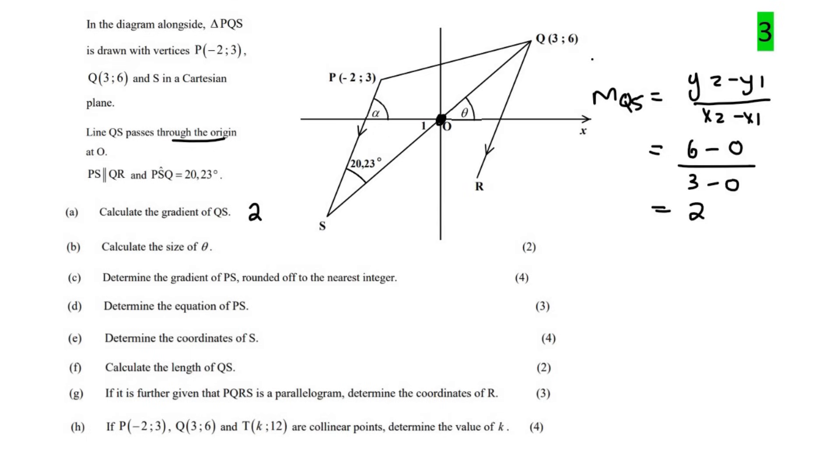Calculate the size of angle theta. Now we know that in grade 11, whenever you have the gradient of a line, you can work out the angle just using angle of inclination. So we can say shift tan of 2, and if you go type shift tan of 2 on your calculator, you will get 63.43 degrees.